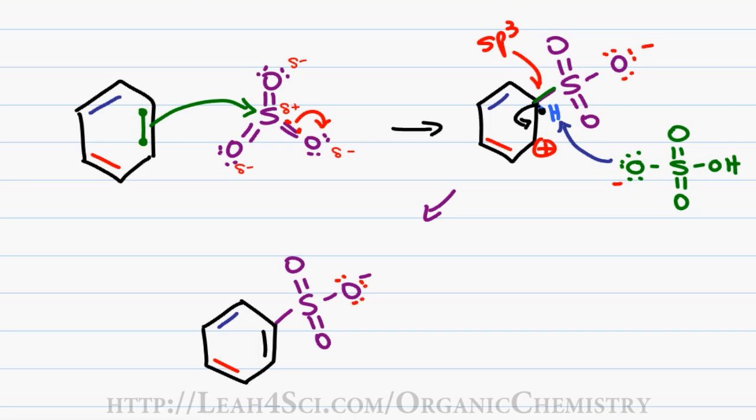But we're not done yet. Benzene is once again aromatic, but the SO3 still has a negative charge, and so the negative oxygen will reach out and grab the hydrogen from sulfuric acid, regenerating the sulfate and giving us a neutral product.